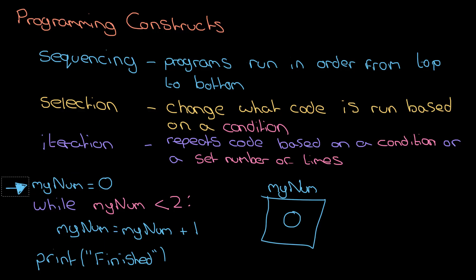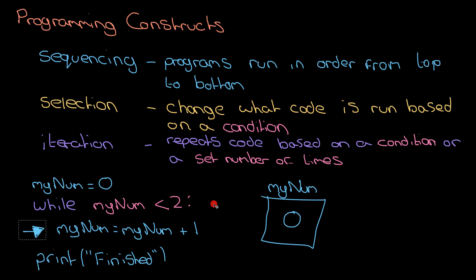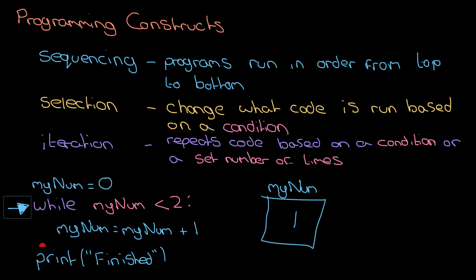The first line runs: 'my_num equals zero' — fine. Next: 'while my_num is less than two' — is it? Yes, it's zero, so we move on. 'my_num equals my_num plus one' — my_num becomes one. Now, importantly, we do not move to the next line below; we go back to the while loop and check the condition again: is my_num still less than two?